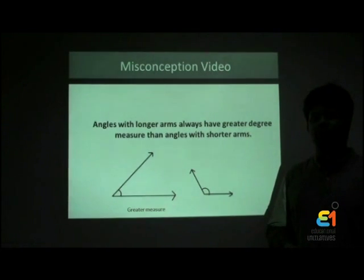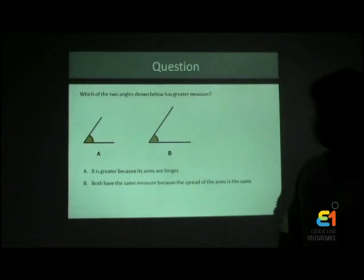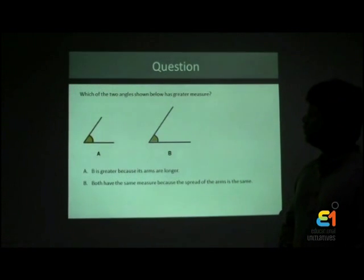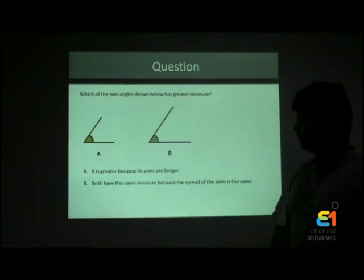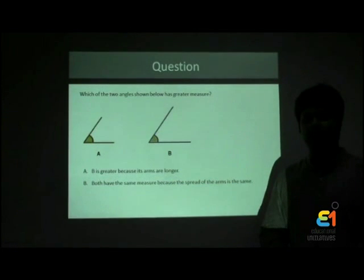Let's look at a few questions from MindSpark which capture this misconception. Which of the two angles shown below has greater measure? Option A is B is greater because its arms are longer. Option B is both have the same measure because the spread of the arms is the same. What do you think is the correct answer to this question?